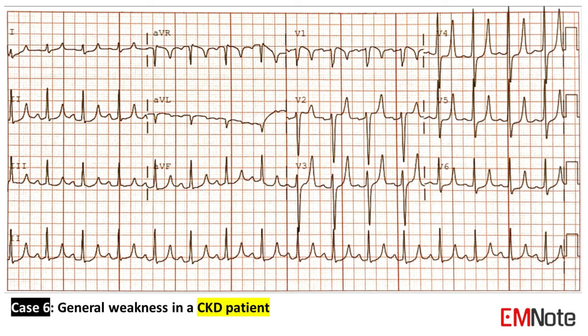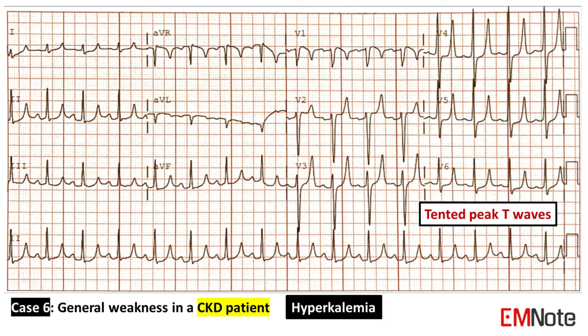Case 6: The patient is a CKD patient presenting with general weakness. The ECG shows tented peak T-waves, which are tall, narrow T-waves that have a pointed peak often described as looking like a tent. Tented peak T-waves are a characteristic ECG finding in hyperkalemia.